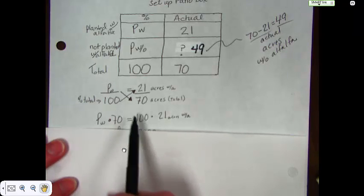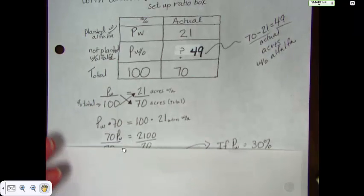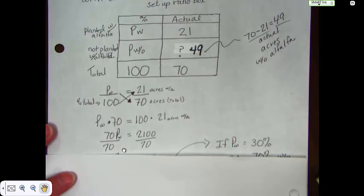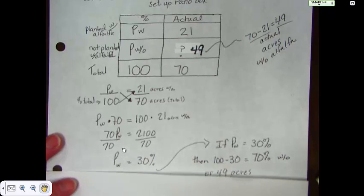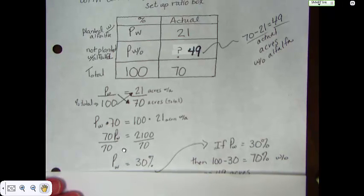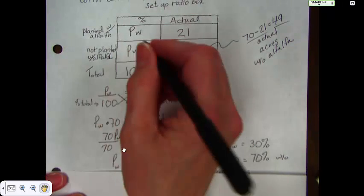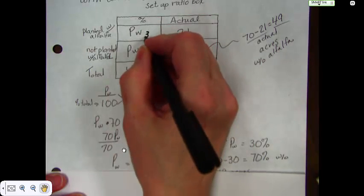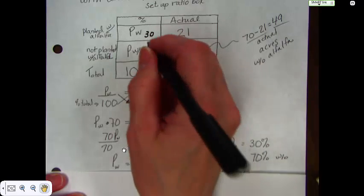P times 70 equals 100 times 21. P times 70 and then divide by 70 on both sides. And I end up with 30, which is 30%. And that is the planted with alfalfa. So 100 minus 30 is 70.